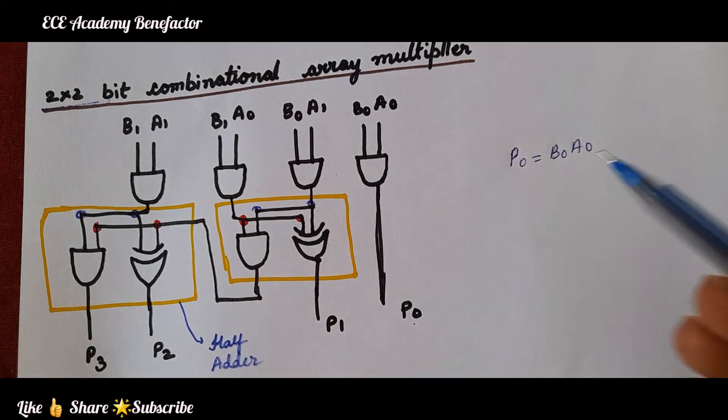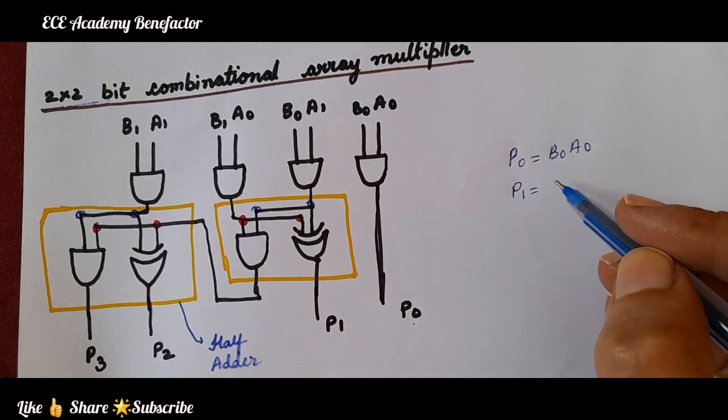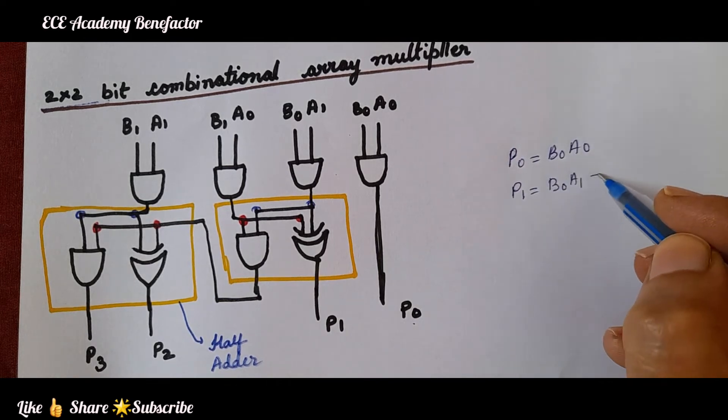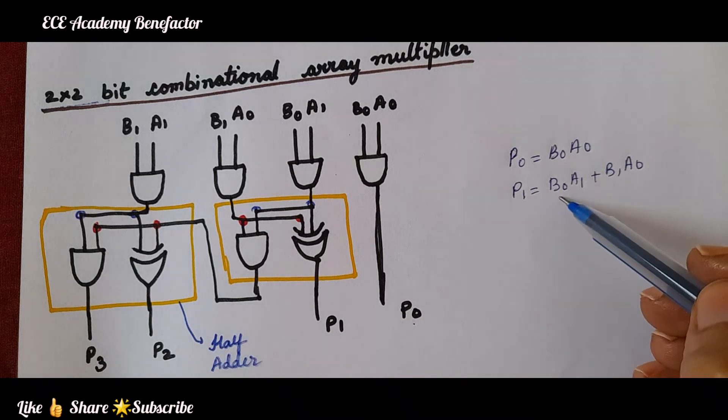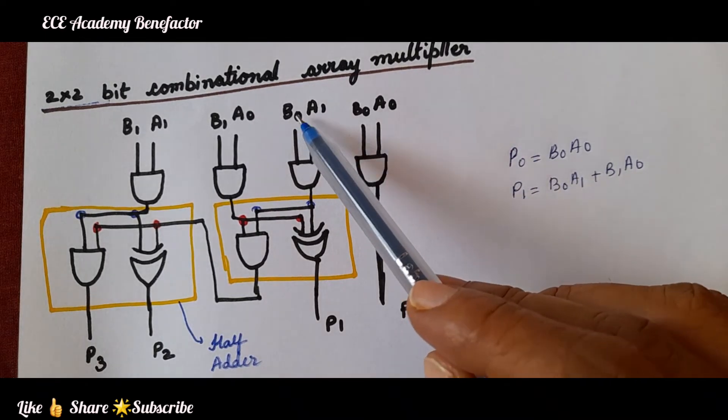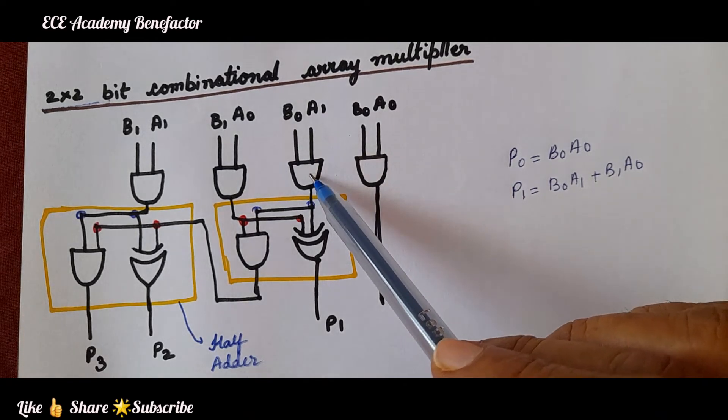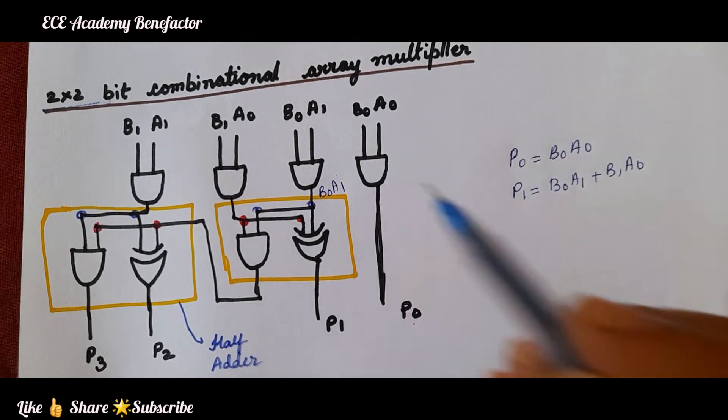Now, the next term is p1. How do we get p1? By adding b0a1 plus b1a0. First we have to generate the term b0a1. We are generating b0a1 given to AND gate to get b0a1. So here we will get b0a1.